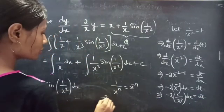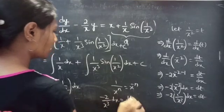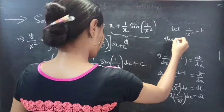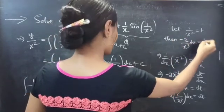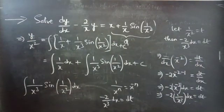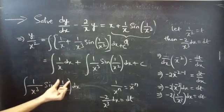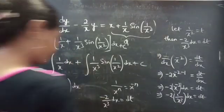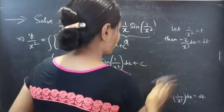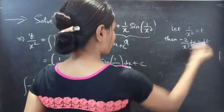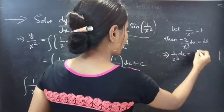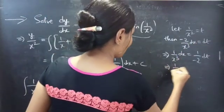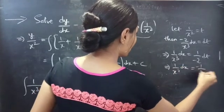We can write x^(minus 3) as 1/x³. So minus 2·(1/x³) dx equals dt. We can rearrange: (1/x³) dx equals minus (1/2) dt. This makes replacement straightforward.